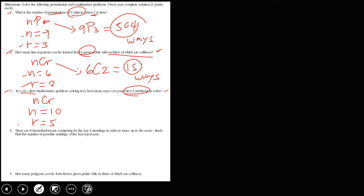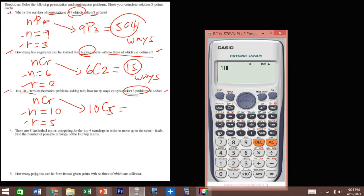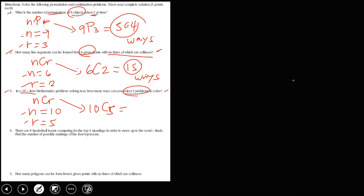Substituting these values into the formula, we get 10C5. Using the calculator, 10 nCr 5 gives us 252. Therefore, there are 252 ways.